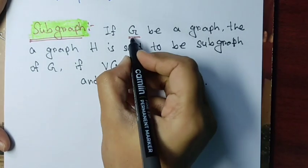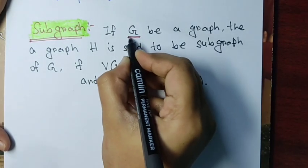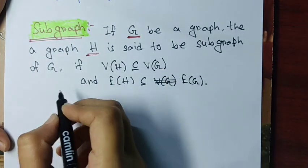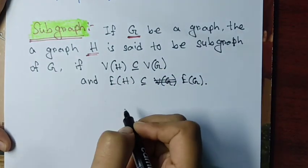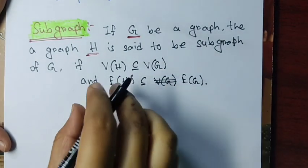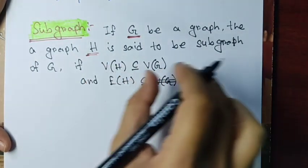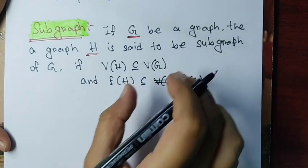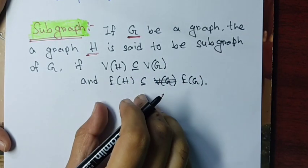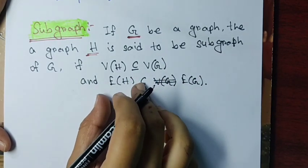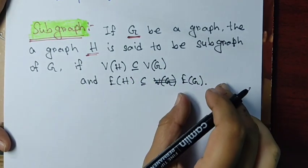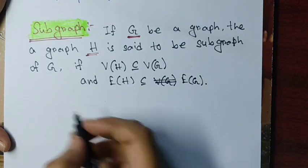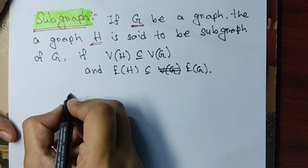So if G be a graph, then another graph say H is called a subgraph of G if the vertex set of H is a subset of the vertex set of G, and the edge set of H is a subset of the edge set of G. We will understand this through examples.